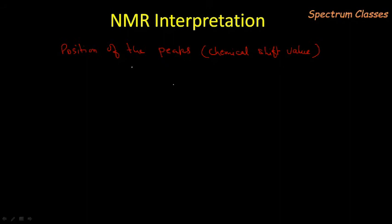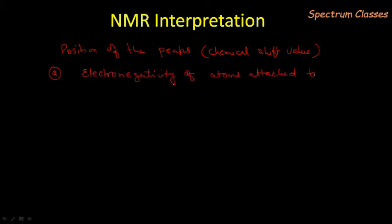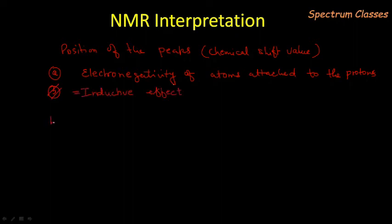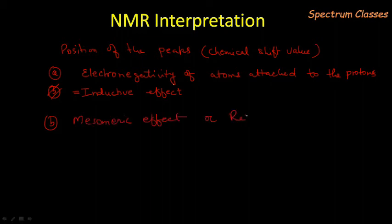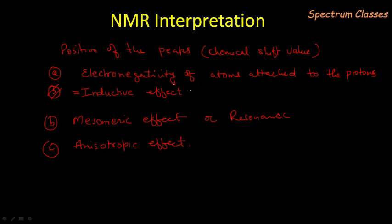The position of the peak or the chemical shift value depends on three factors. First is the electronegativity of the atoms attached to the proton — this is also called the inductive effect. The second one is the mesomeric effect or resonance. The third is magnetic anisotropy. These three are the important points on which the position of the signal depends.